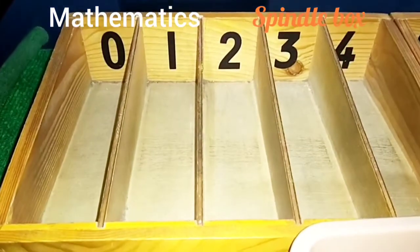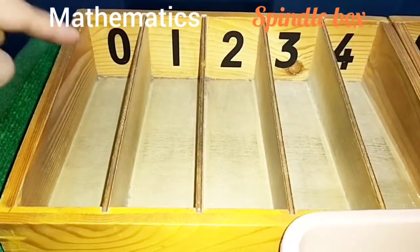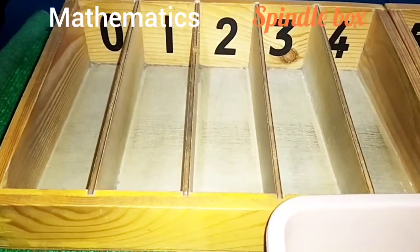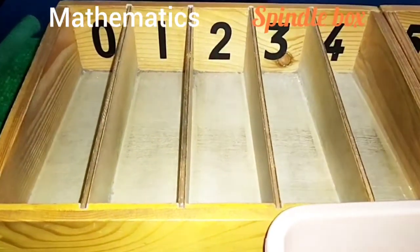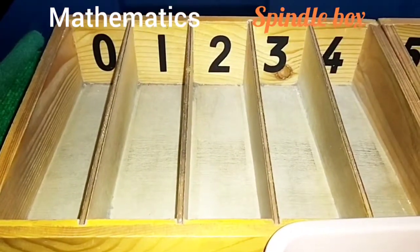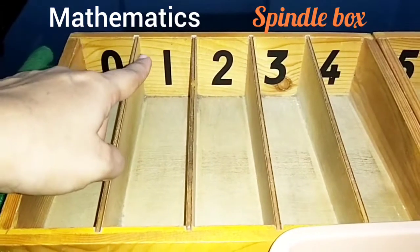Zero means nothing. Zero means nothing. So we don't put any spindles in this compartment. That is why we are going to put spindle in this compartment. Because zero means nothing. Okay, then what is next number?